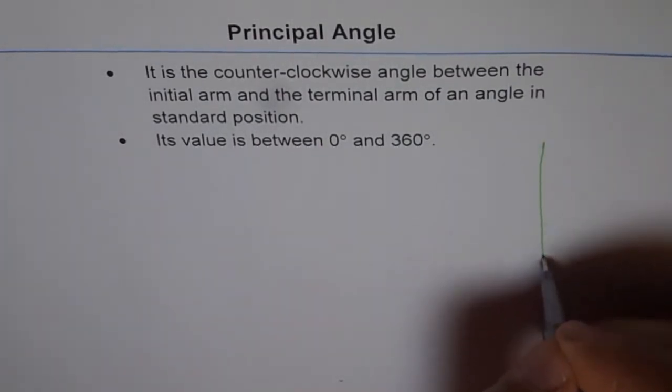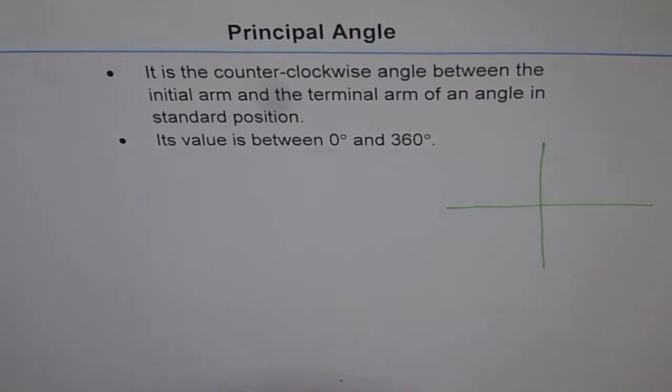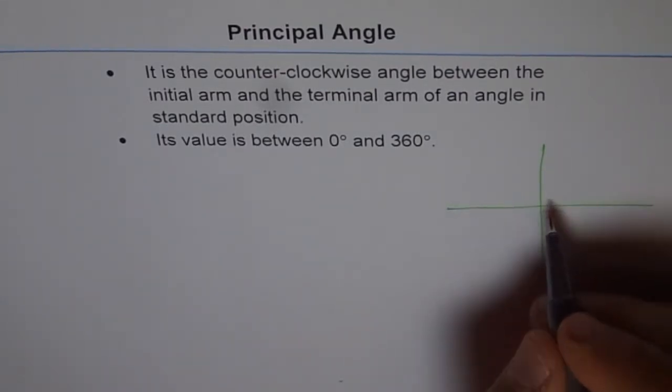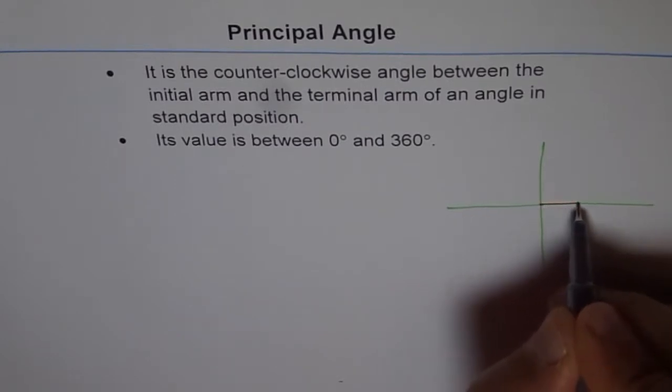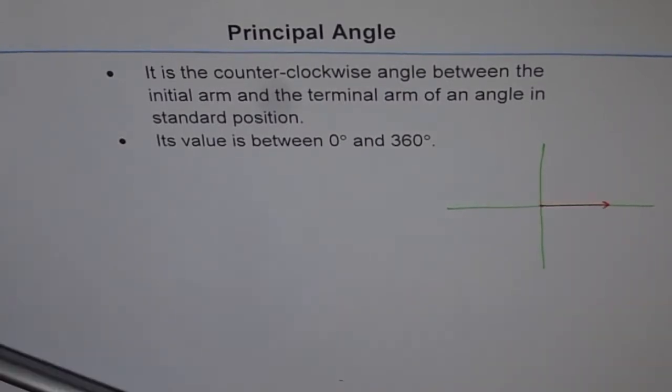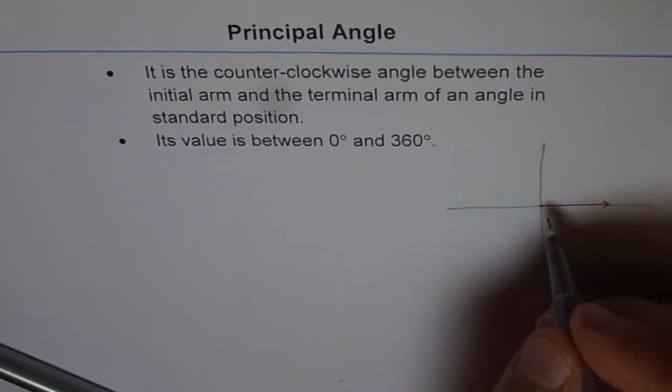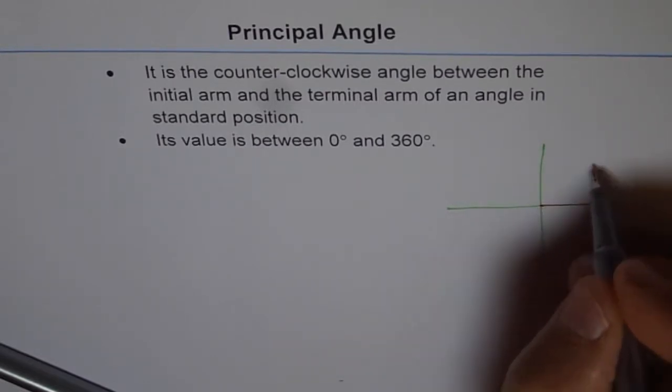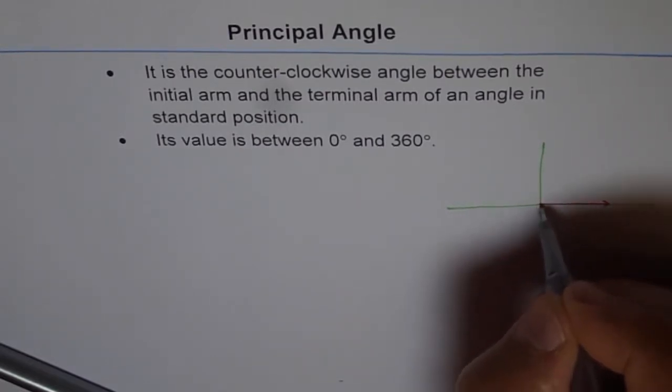So let's draw one and then see what we are talking about. So that is our coordinate plane. Whenever we say standard position, it means vertex is at the origin. So vertex is at origin and initial arm is along x-axis. That is our standard position. Now, any angle, terminal arm could be anywhere in any quadrant.